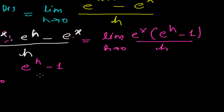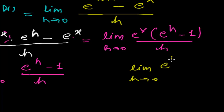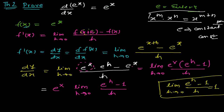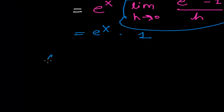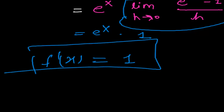Now remember what we learned in the limits chapter: the limit when h tends to 0 of (e to the power h minus 1) divided by h is equals to 1. I'm now using that same result here. So what I get is e to the power x times 1.